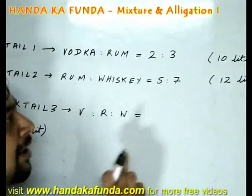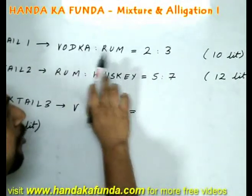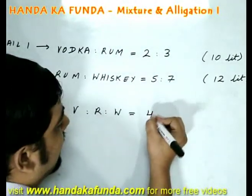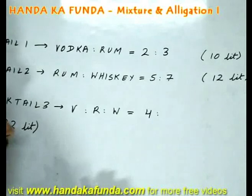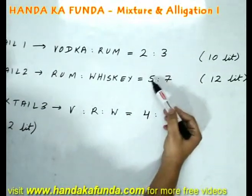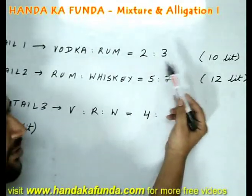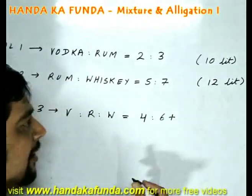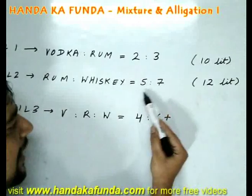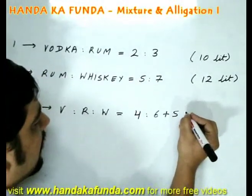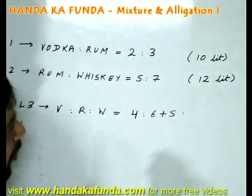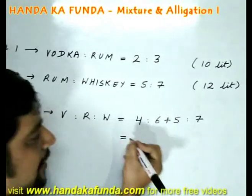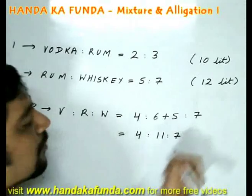Vodka comes only from cocktail 1. With a 2 to 3 ratio, dividing 10 litres gives 4 litres of vodka. Rum comes from both cocktails: from cocktail 1, that is 3 out of 5 of 10 litres, giving 6 litres; from cocktail 2, that is 5 out of 12 of 12 litres, giving 5 litres — so total rum is 6 plus 5, which is 11 litres. Whiskey is 7 out of 12 of 12 litres, which is 7 litres. Therefore the required ratio is 4 to 11 to 7.